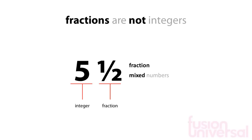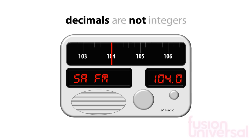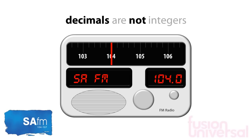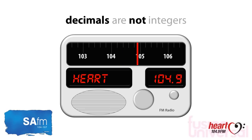Now let's look at decimals. Decimals are not integers. How do you tune into your favorite radio station? You set your radio to the correct frequency. If you like SAFM, then you set the frequency to 104 — this is an integer. However, if you like HOT 104.9 FM, you tune into 104.9. This is not an integer; it is a decimal.